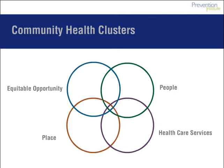Equitable opportunity relates to the fair and equal distribution of things like quality jobs and education. Place relates to the physical structures of a space, like parks, streets, and food retail. The people cluster includes how people interact with one another and civic engagement. Health care services relates to the availability and accessibility of high-quality, affordable health services.